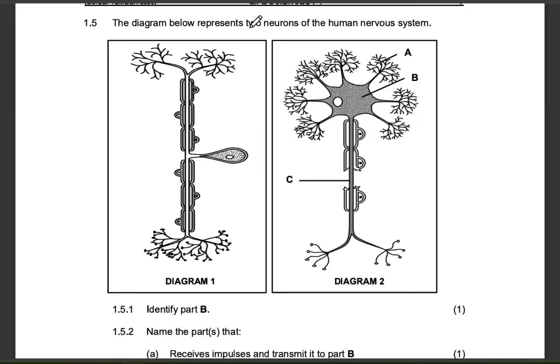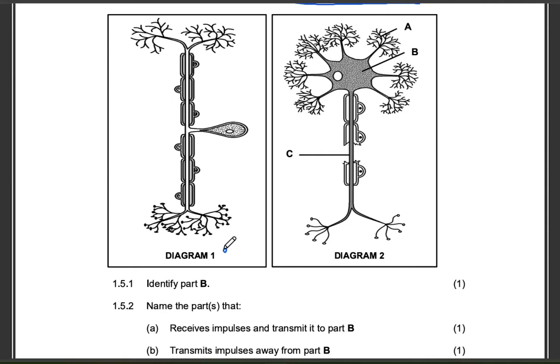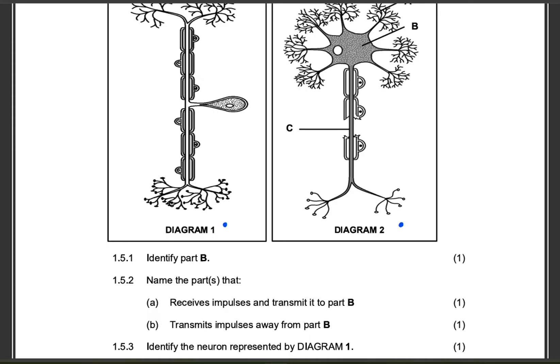The diagram below represents two neurons of the human nervous system — diagram one and diagram two. Remember, we have three different neurons: your sensory neuron, your connector or interneuron, and also your motor neuron. In our specific question, we are however only given two different neurons.